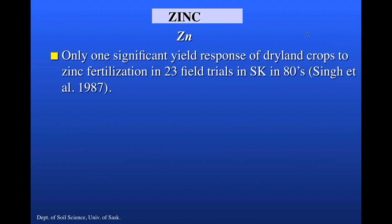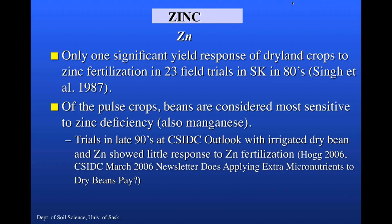Moving on to zinc: some work done by J. Paul Singh at the U of S involving 23 field trials in Saskatchewan with a variety of crops including peas and lentils found only one significant yield response of dryland crops to zinc fertilization. Some trials conducted in the late 1990s at the Irrigation Development Center at Outlook with irrigated dry bean — a crop considered quite sensitive to zinc deficiency — showed little response to zinc fertilization. These were soils that overall had fairly high extractable zinc levels.